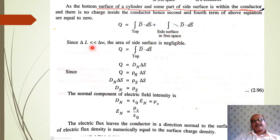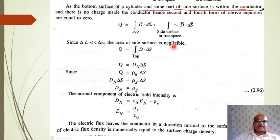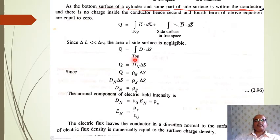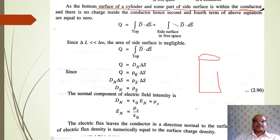So q = integral over top surface of D·dS + integral over side surface in free space of D·dS. Since the height ΔL is very much less than ΔW, the area of the side surface is negligible and that term is also cancelled. Therefore q = integral over the top surface of D·dS only, meaning we apply Gauss's law only to the top surface.